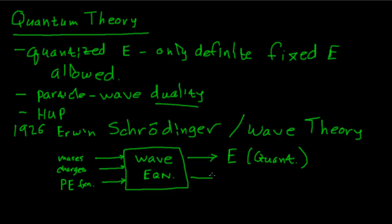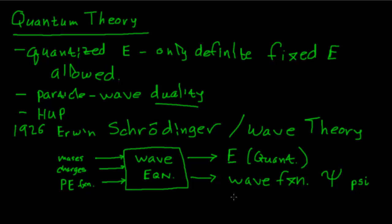The second output is something called a wave function, given the mathematical symbol psi — the Greek letter that looks like a trident or pitchfork, written P-S-I. Wave functions tell us something about the probability or likelihood of finding one of our particles, like our electron, at some location in space.